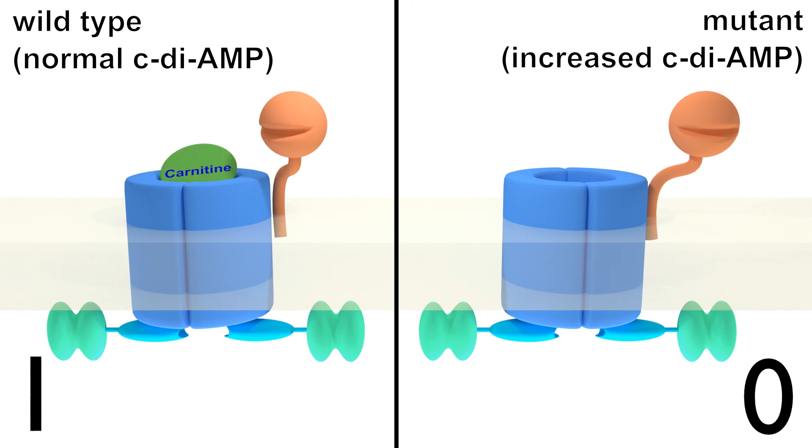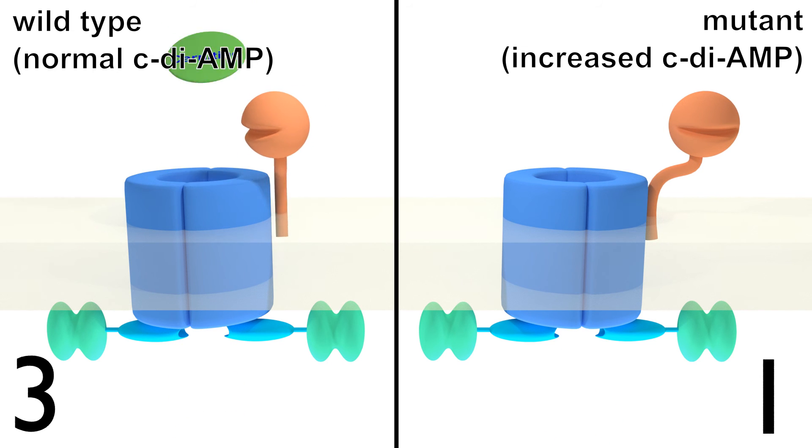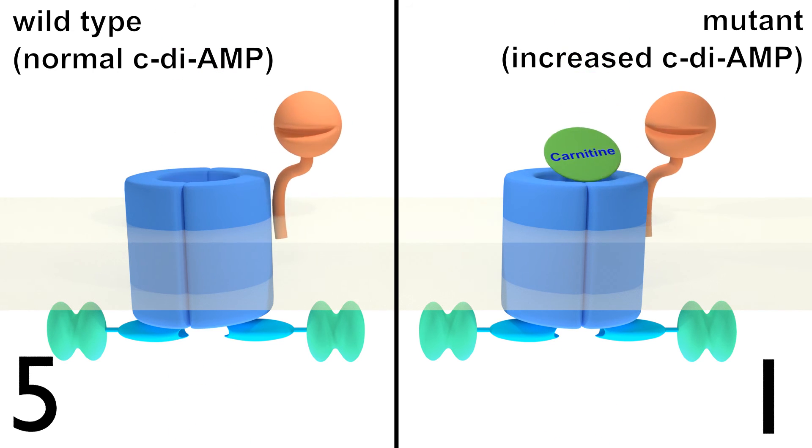When cyclic di-AMP levels were increased in the cell, the uptake of carnitin was reduced compared to wild-type cells.